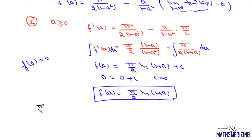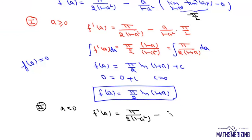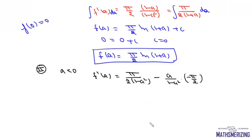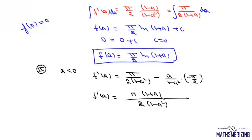Now for the second part: when a is less than zero. In this case, tan⁻¹(ax) as x→∞ gives −π/2. So f'(a) = π/(2(1−a²)) minus a/(1−a²) · (−π/2). We can write this as f'(a) = π(1+a) / (2(1−a²)). Since 1−a² = (1−a)(1+a), the (1+a) factors cancel, giving f'(a) = π/(2(1−a)).